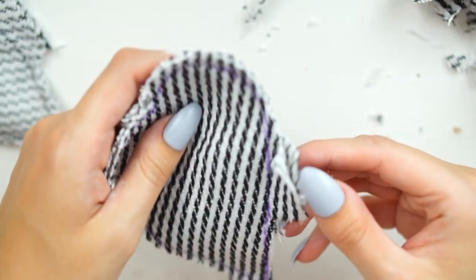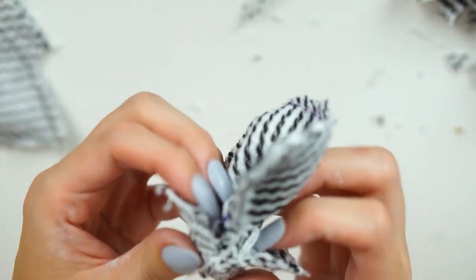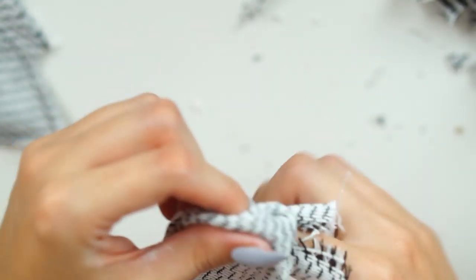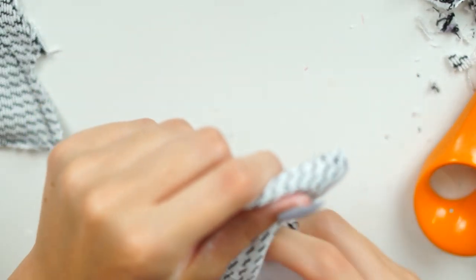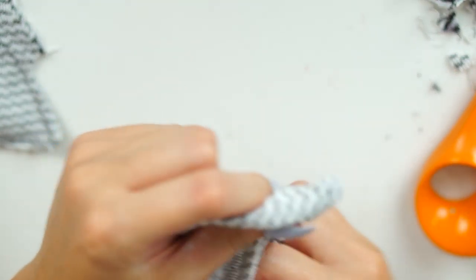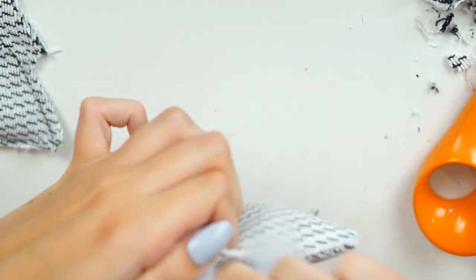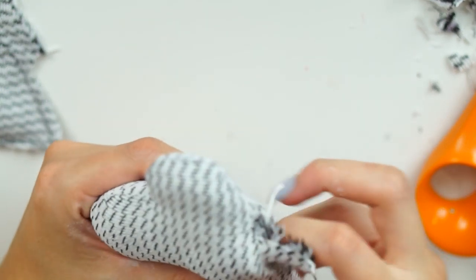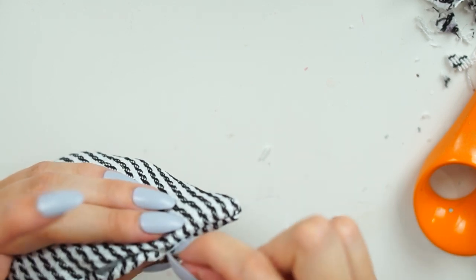So once I had most of the fabric removed I just turned it the right side way around and then I lightly stuffed it with some polyfill stuffing. When I stuff my hearts I do make sure to get down into the rounder bits of the heart first and then I do the point, making sure to get really far down into that, and then I just fill out the middle at the end.